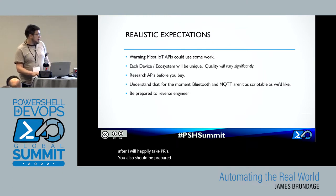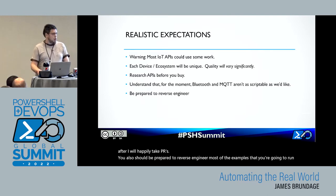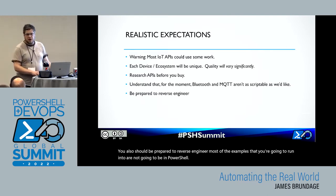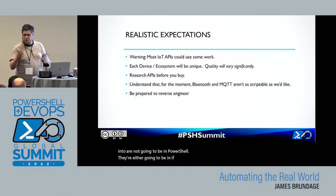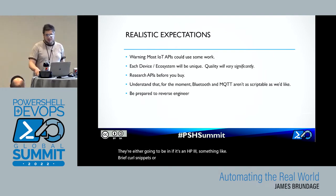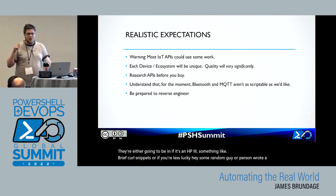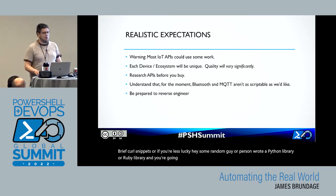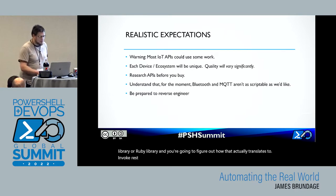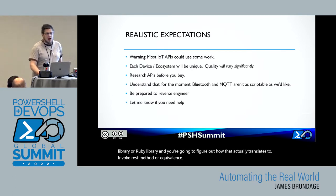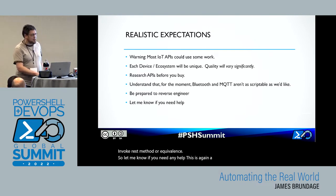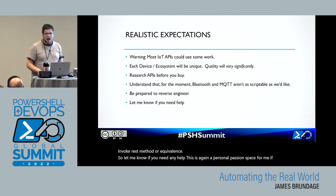You also should be prepared to reverse engineer. Most of the examples you're going to run into are not going to be in PowerShell. They're either going to be brief curl snippets for HTTP APIs, or if you're less lucky, some random person wrote a Python or Ruby library and you're going to figure out how that actually translates to Invoke-RestMethod or equivalent. This is a personal passion space for me, so if you want help, I'm happy to provide it.